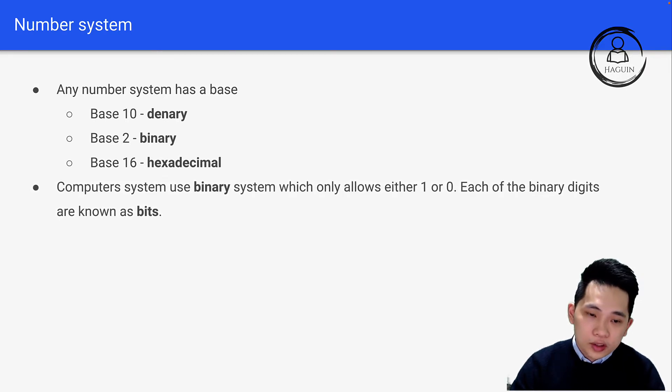Computer systems always use binary system, which only allows either 1 or 0. Each of the binary digits are known as bits. Most data is stored as 8-bit patterns, which is called bytes. Remember that 8 bits stand for 1 byte.